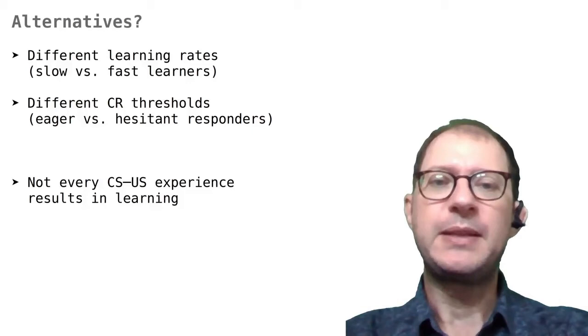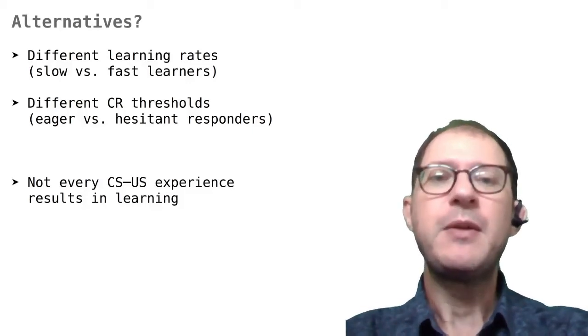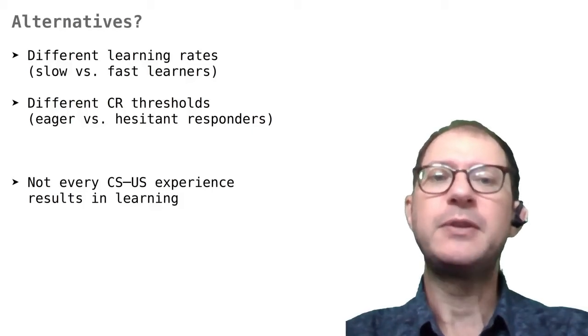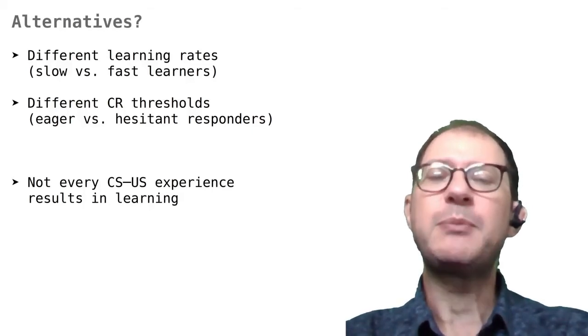For example, an eager rabbit might respond already when the associative strength is 0.1, while another might need to have learned an associative strength of 0.5 to start responding. We tried to change RW in these ways in our paper, but we did not find that the fit to the actual data improved much.